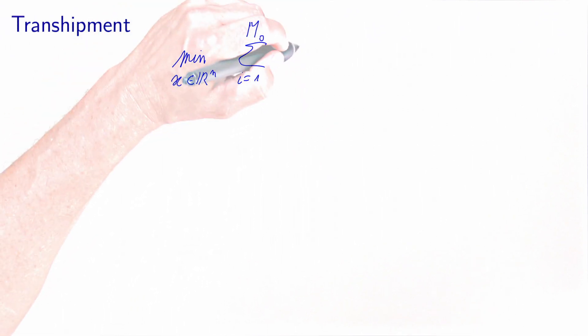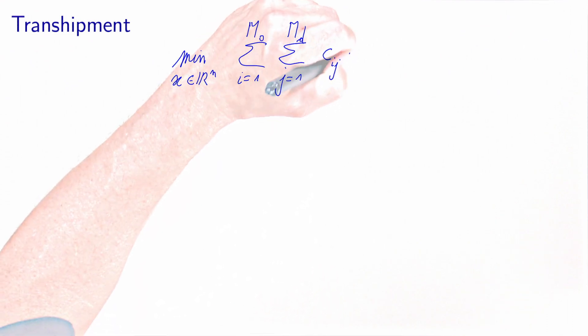So this is the classical objective function of a transshipment problem over all the arcs that we have included in our model, subject to the flow conservation constraints.